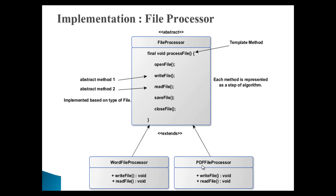In order to process a particular type of file, we have to follow a few steps such as: open a file, write to a file, read a file, save a file, and finally close the file. All these methods should be performed in steps, so the processFile method calls each method in sequence. As reading and writing of a Word file is different from a PDF file, these methods are marked as abstract. Both subclasses — WordFileProcessor and PDFFileProcessor — extend the FileProcessor class and provide their own specific implementation for reading and writing.